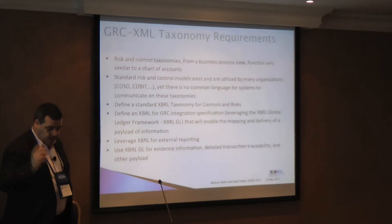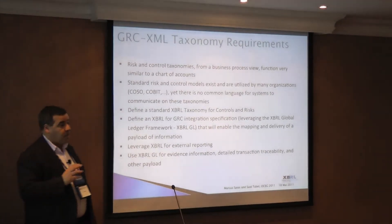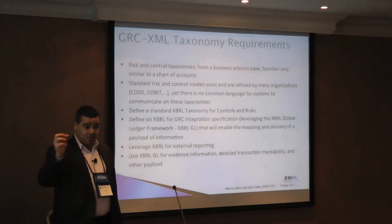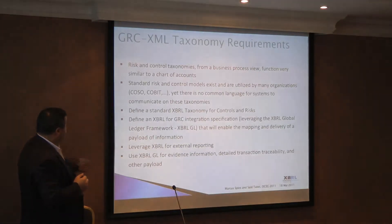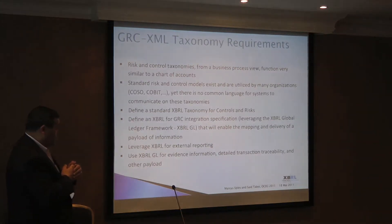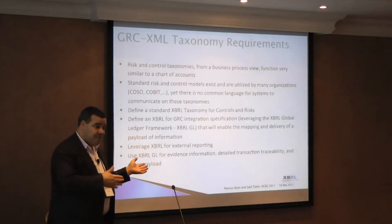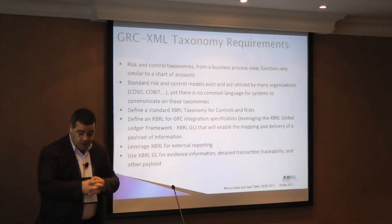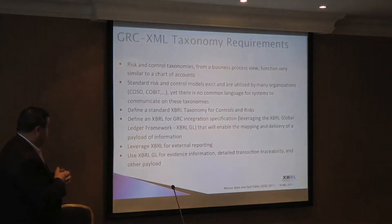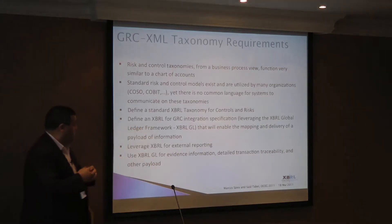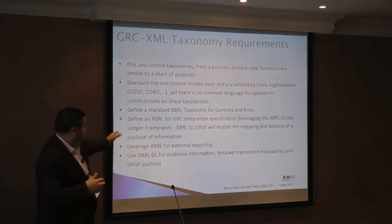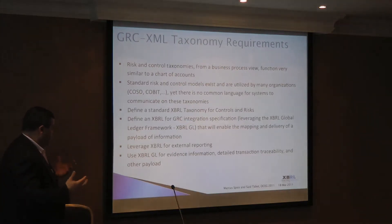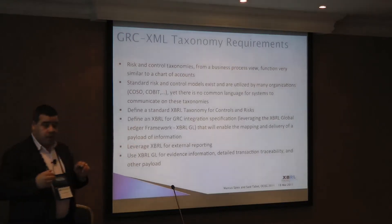Looking at risk and control taxonomies from a business process view, they function very similarly to charts of accounts. Requirements include standard risk and control models — COSO, COBIT, PCI for credit cards — but they all differ with no common language. We said XBRL has been around for over 10 years, so why not leverage it? We also focused on integration across silo-based systems, delivering automated mappings and leveraging XBRL for external reporting.